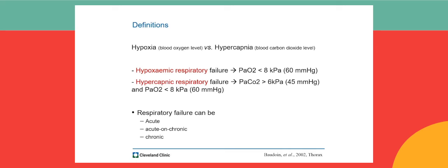Before we get started, I think we should talk about the definitions and make sure that everyone is aware of their accurate definitions. Everyone should be aware that respiratory failure occurs when a disease of the heart or lungs, or maybe a combination of both, leads to a failure in maintenance of adequate blood oxygen level — the so-called hypoxia — or an increase of blood carbon dioxide levels — the so-called hypercapnia. By definition, hypoxemic respiratory failure is characterized by an arterial oxygen tension below 60 mmHg, with usually normal or low arterial carbon dioxide tension.